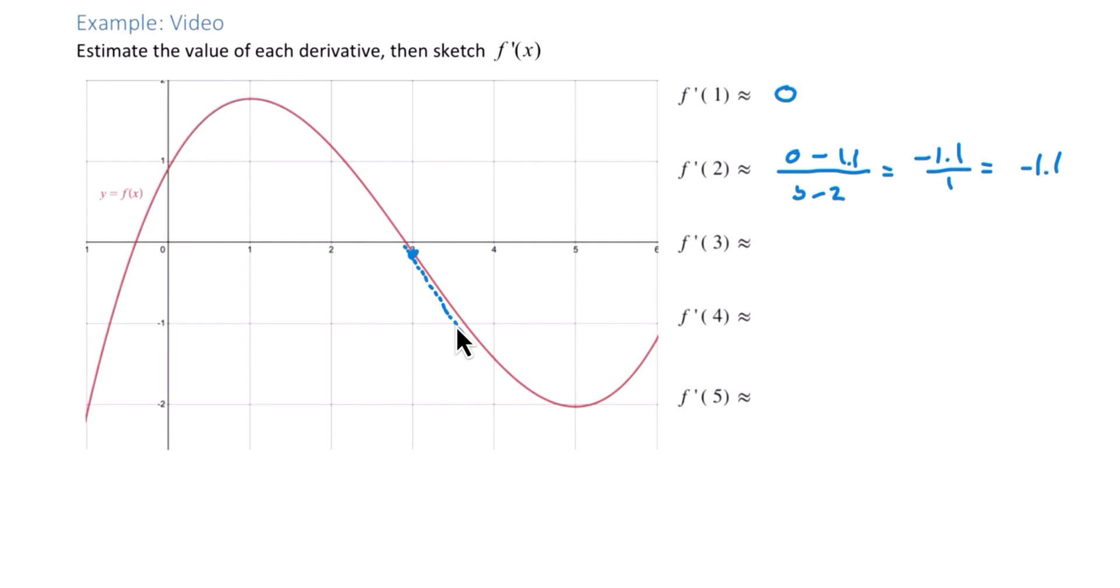If we're looking at this coordinate, that looks to be roughly a y value of negative 1 minus a y value of roughly maybe negative 0.1 over an x value of, let's say, 3.5 minus 3. That will give us negative 0.9 over 0.5. So that's roughly negative 1.8.